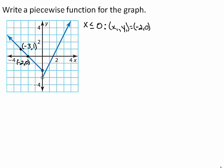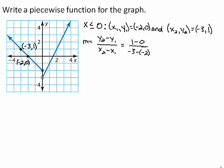Let x1, y1 equal negative 2, 0 and x2, y2 equal negative 3, 1. Substituting these points into the slope formula, you get the quantity 1 minus 0 divided by the quantity negative 3 minus negative 2, which simplifies to 1 divided by negative 1, or negative 1.